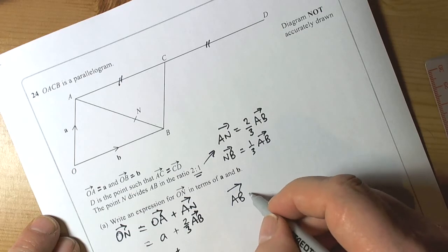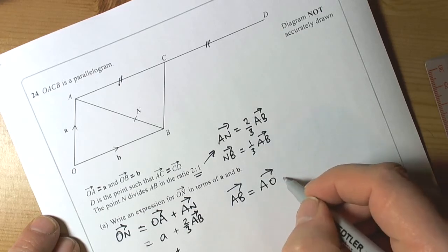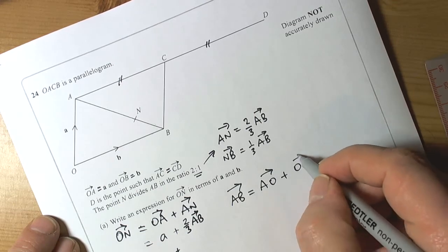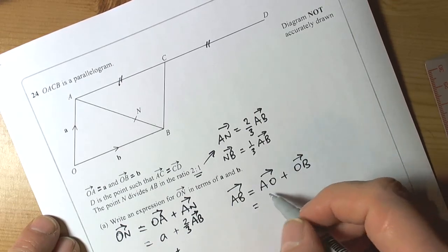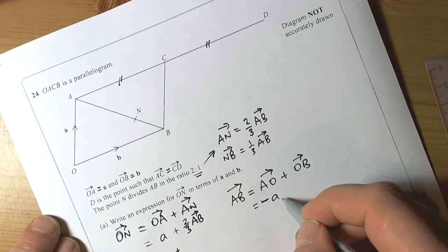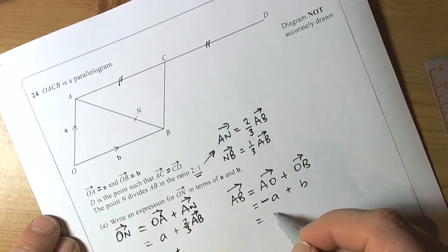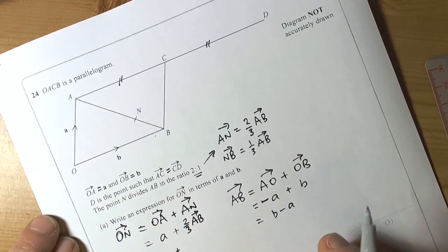So AB is the vector AO plus the vector OB. Well, AO is going in the negative direction to A, so this is going to be negative a. And then OB is b. So writing that a little bit neater, positive bit first is b minus a.